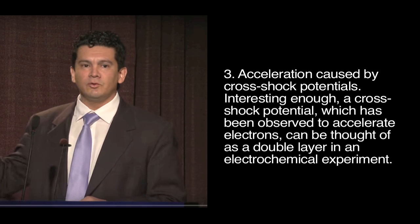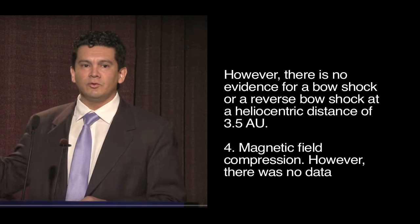3. Acceleration caused by cross-shock potentials. Interesting enough, a cross-shock potential, which has been observed to accelerate electrons, can be thought of as a double layer in an electrochemical experiment. However, there is no evidence for a bow-shock or a reverse bow-shock at a heliocentric distance of 2.5 astronomical units.